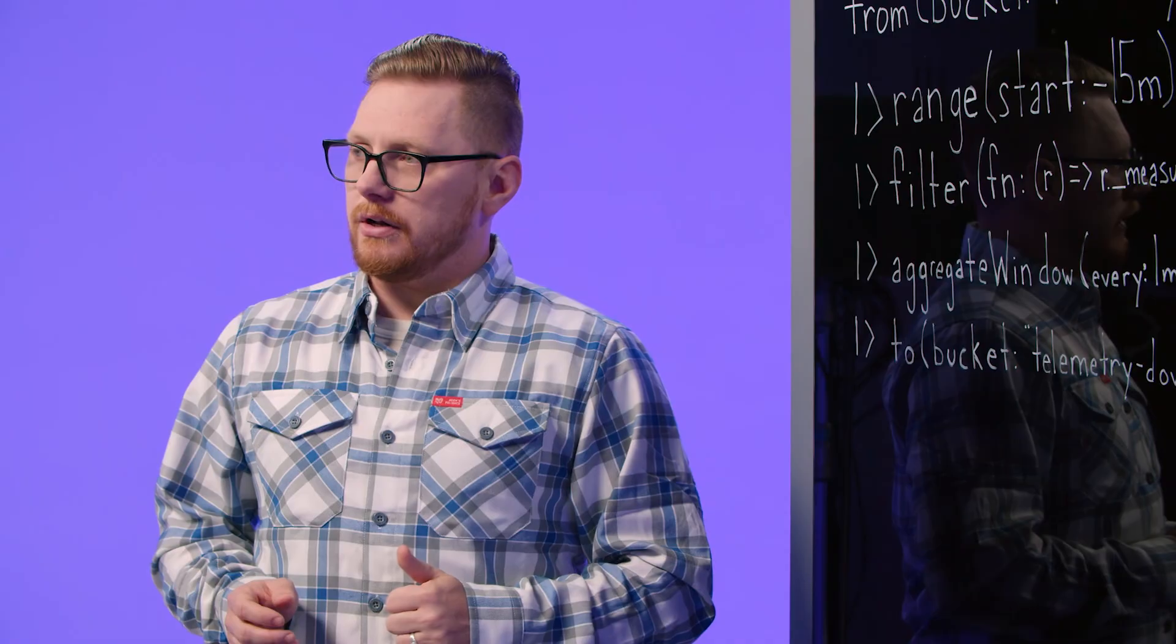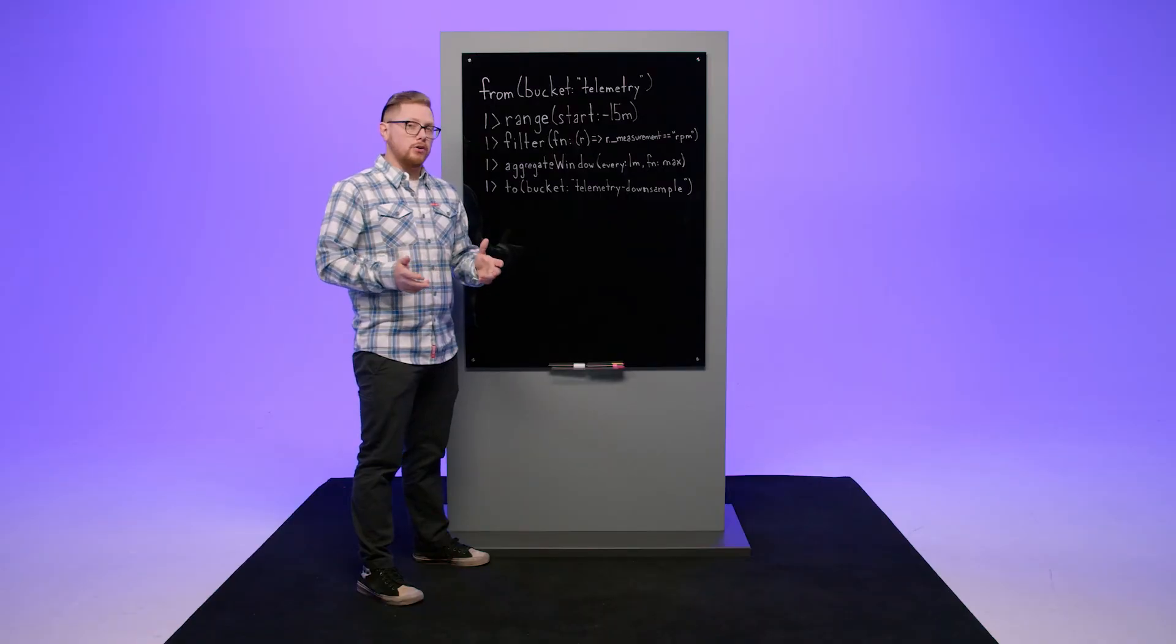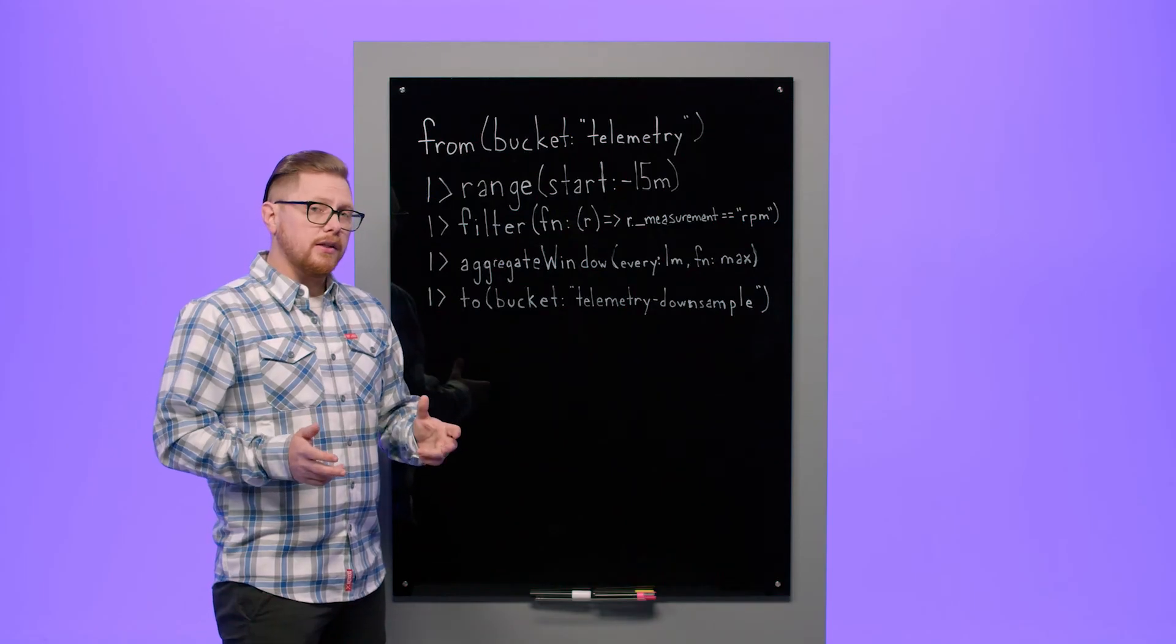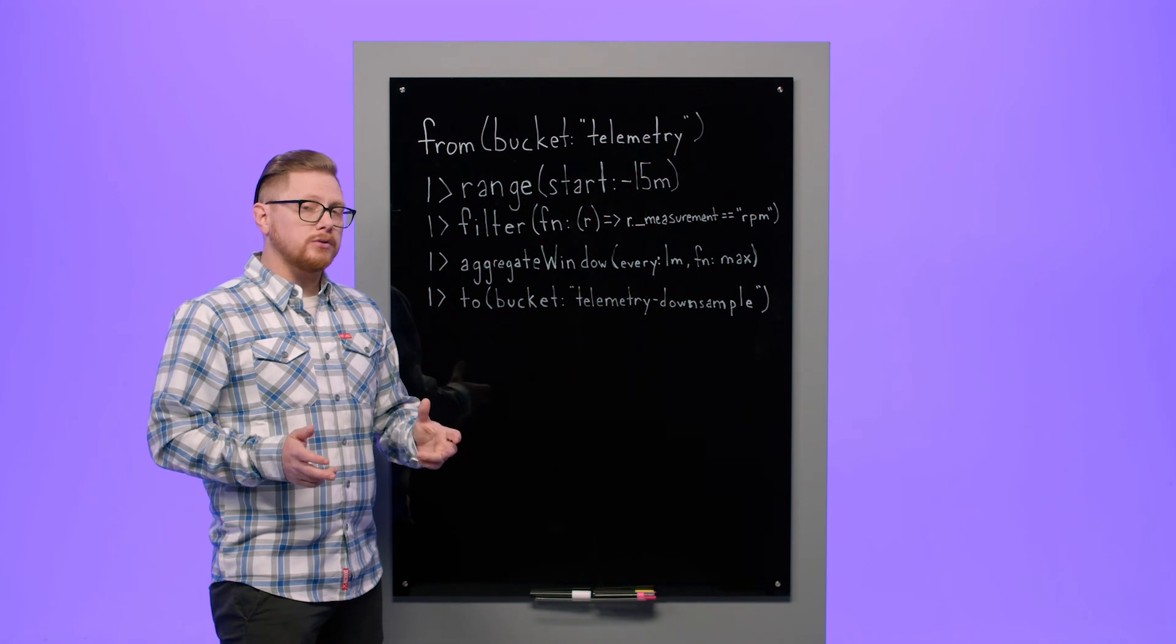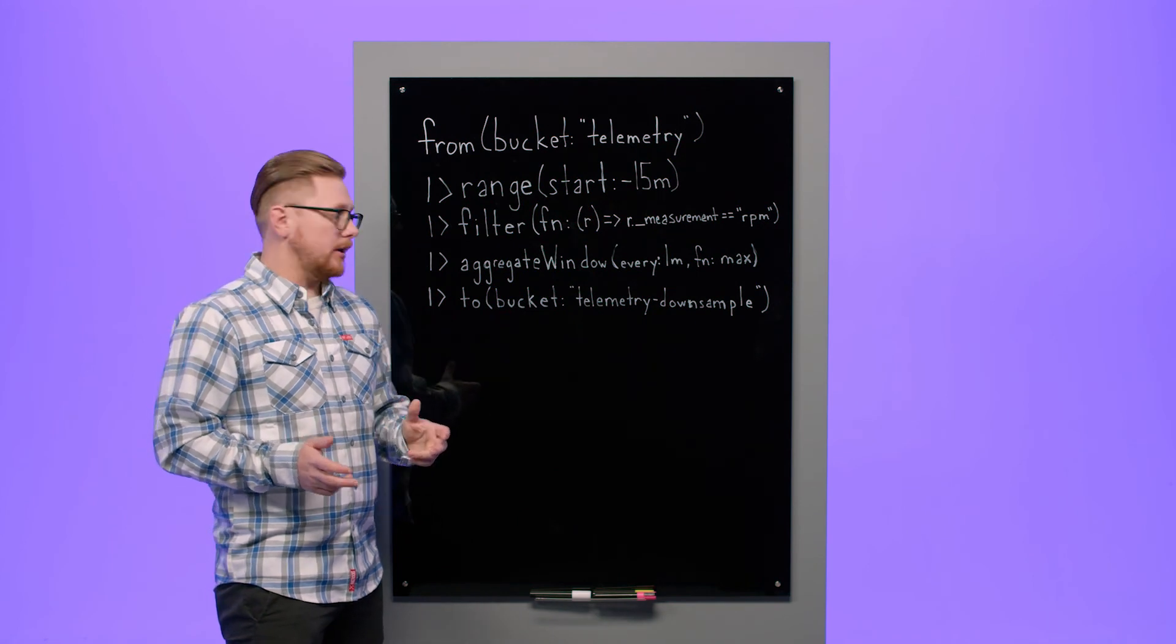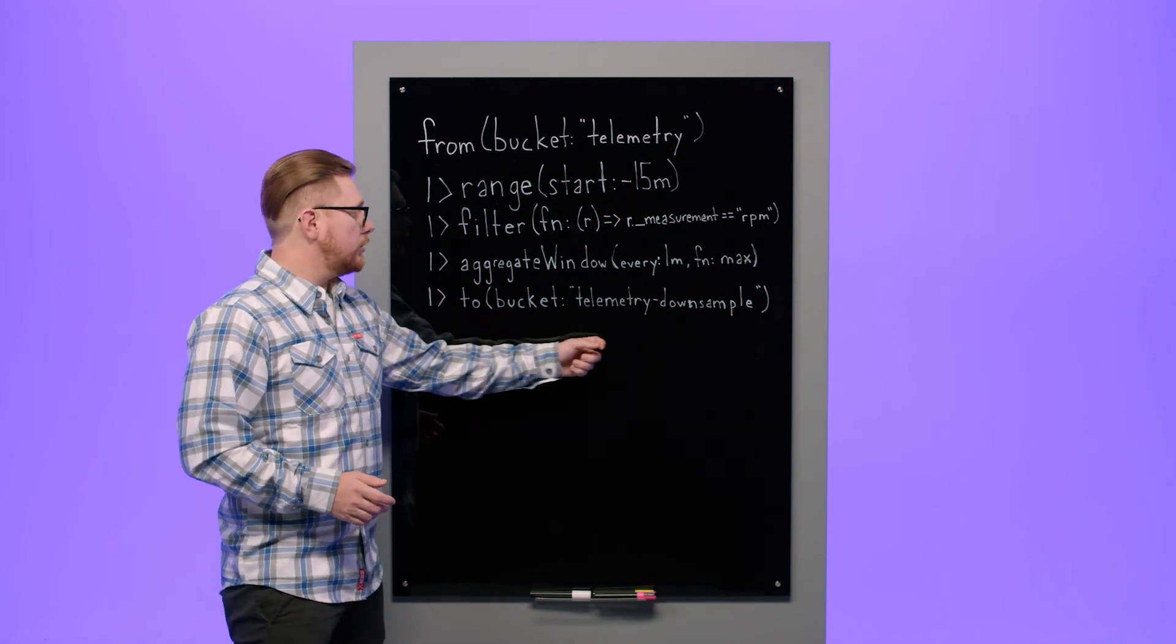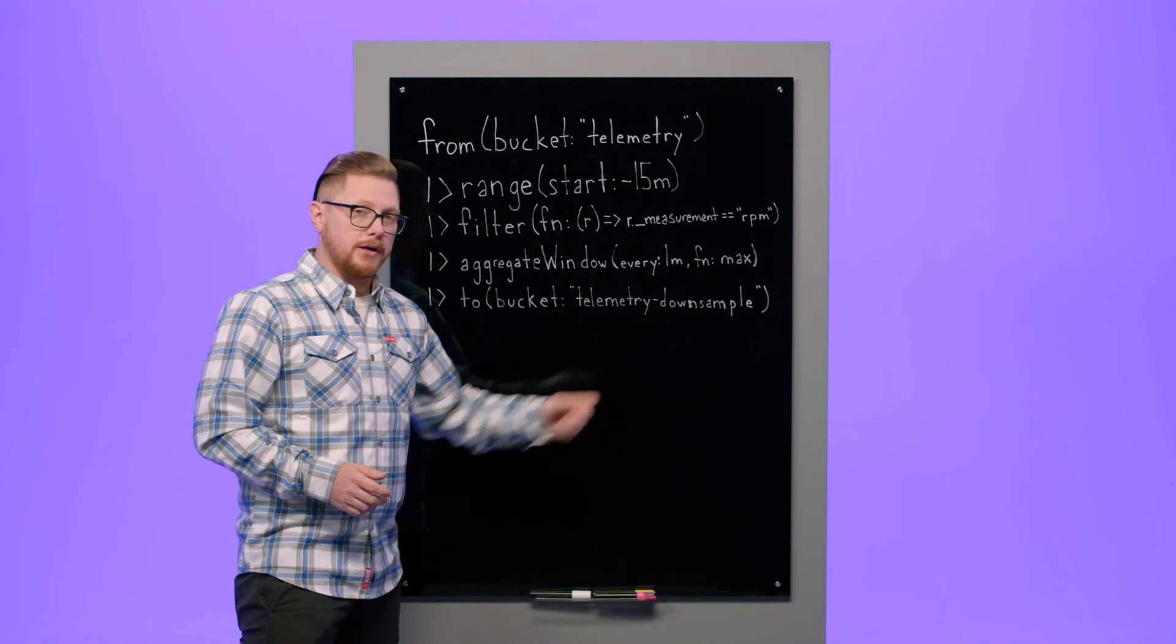Now that we have our final result set, we may want to ask, what do we want to do with our data? A common thing would be to put it in a graph. But in this case, let's write that data out to a downsampled InfluxDB bucket using the to function to the telemetry downsample bucket.